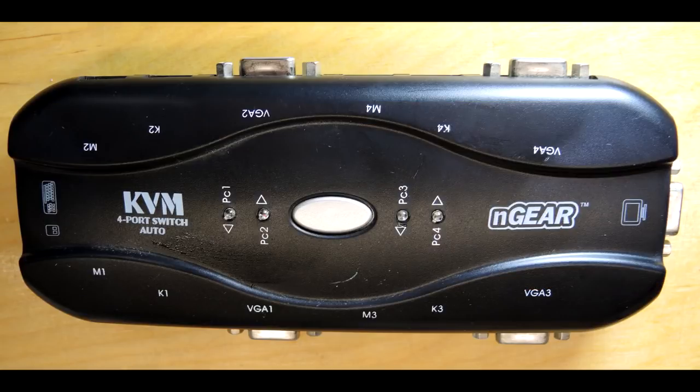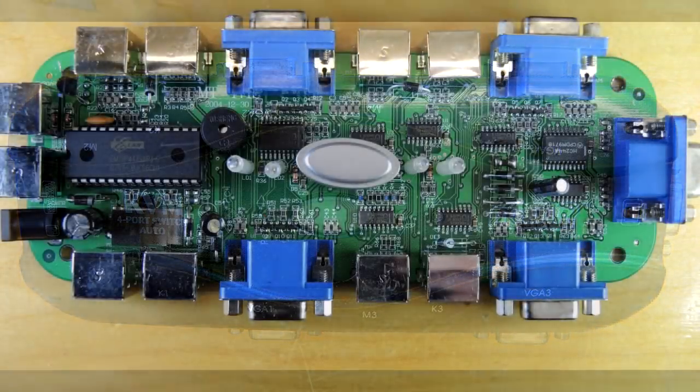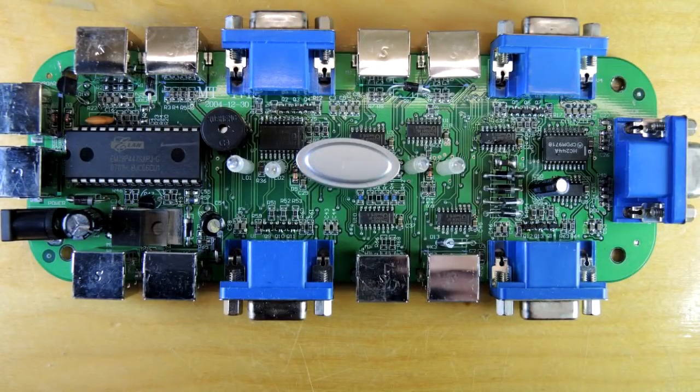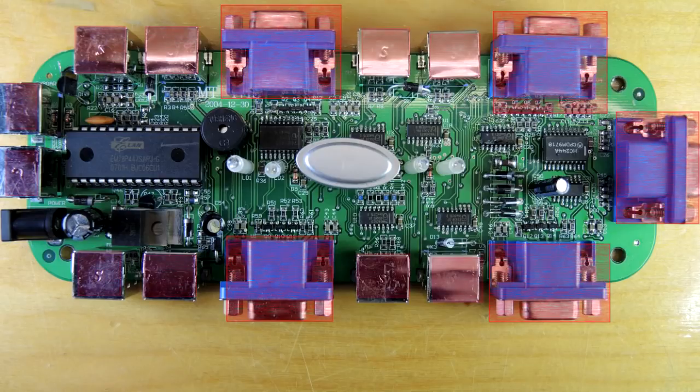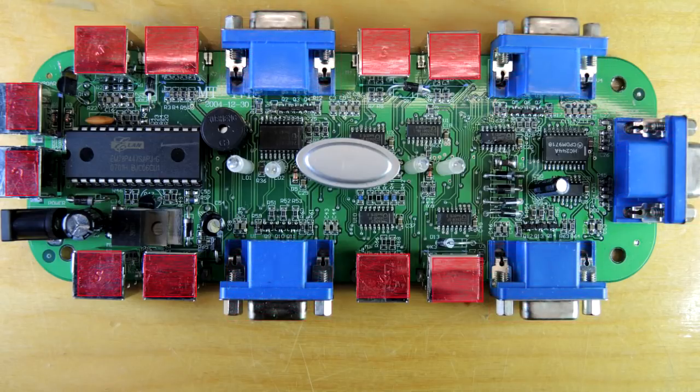Let's see how it was built. If we remove the top cover we can look down and see a single circuit board. Those blue connectors of course are the VGA connections, the silver are the PS2 keyboard and mouse ports.